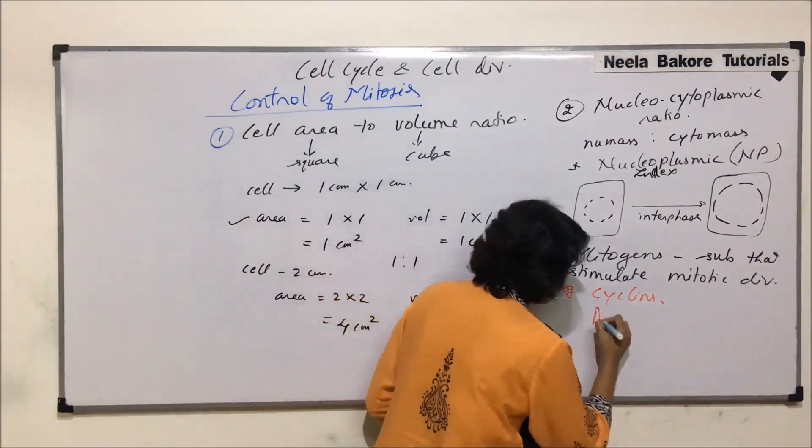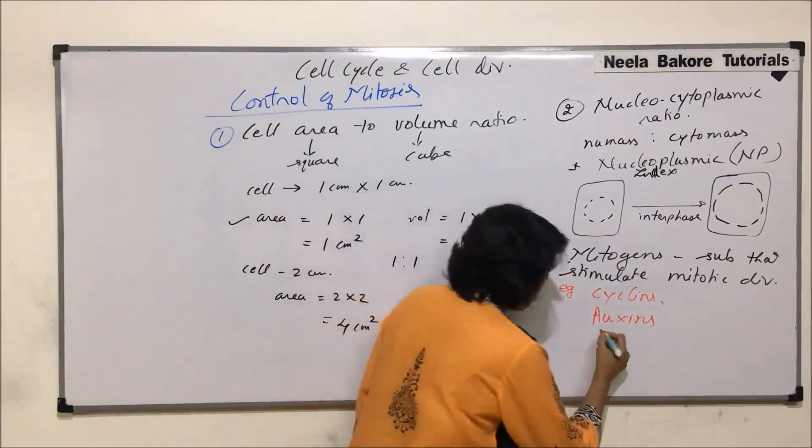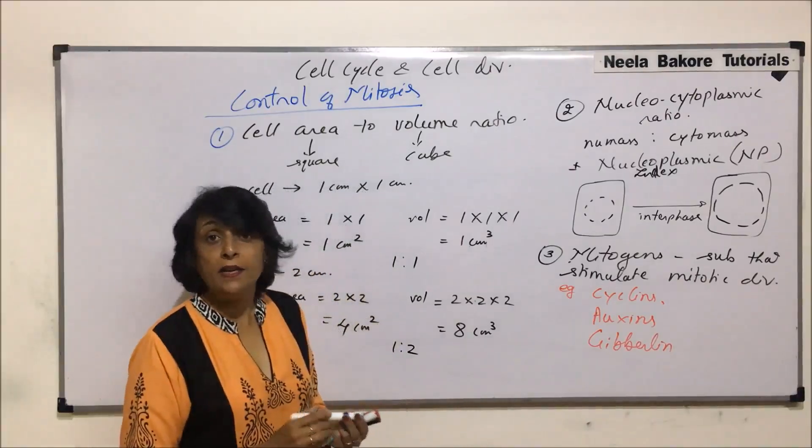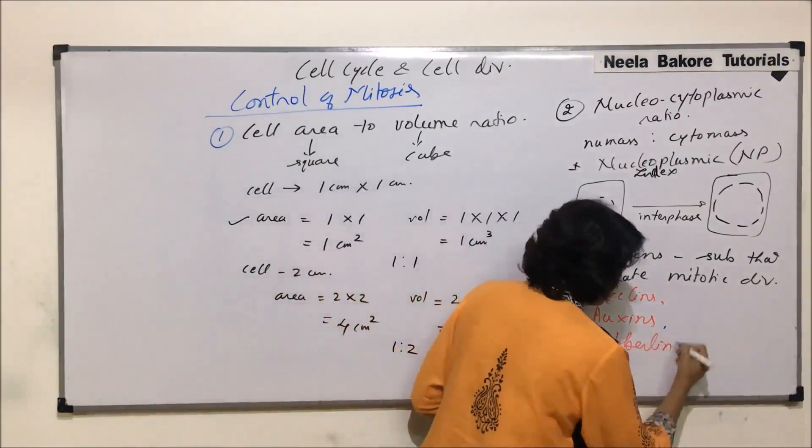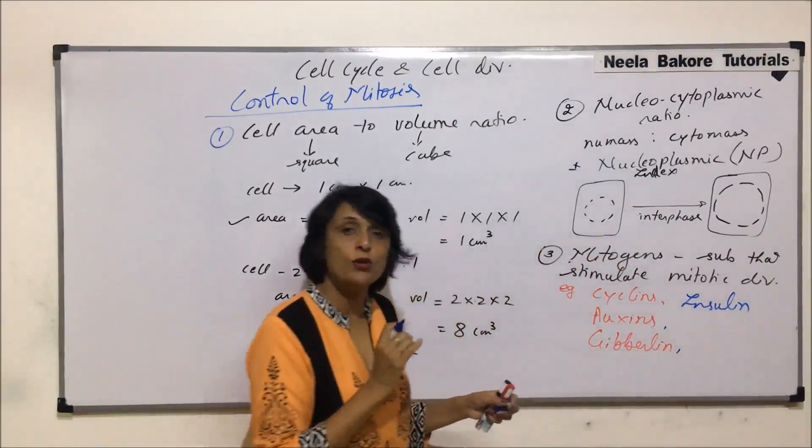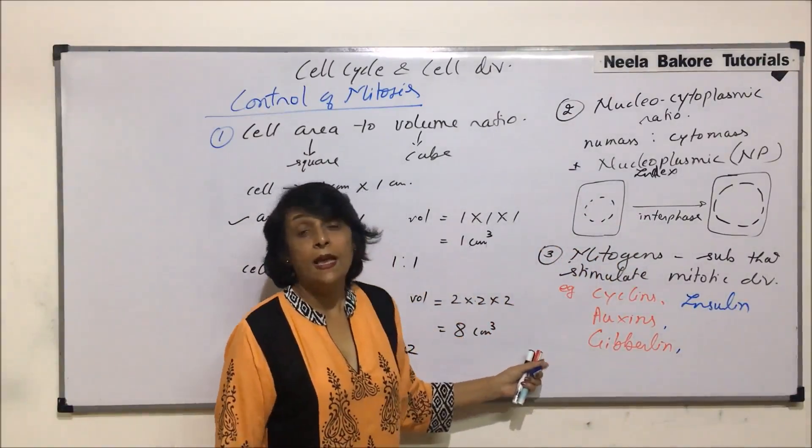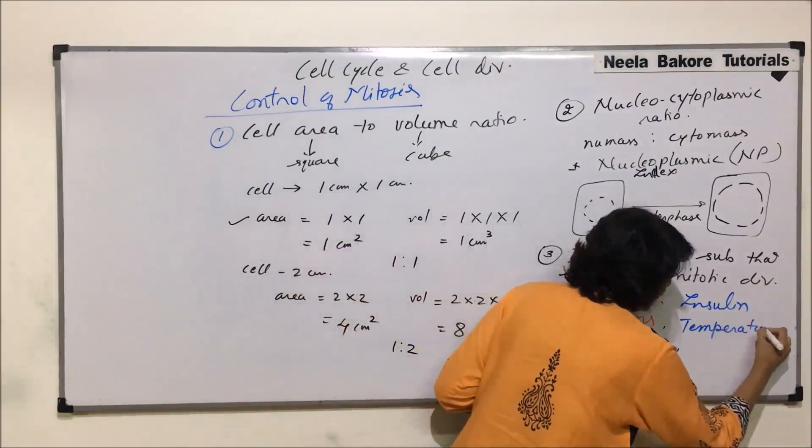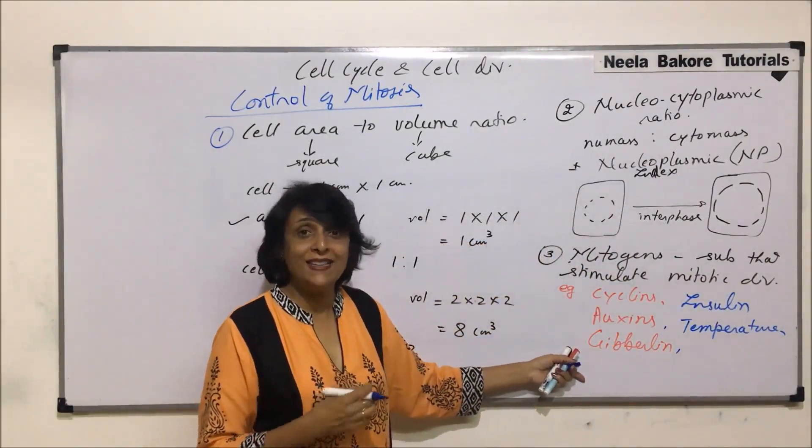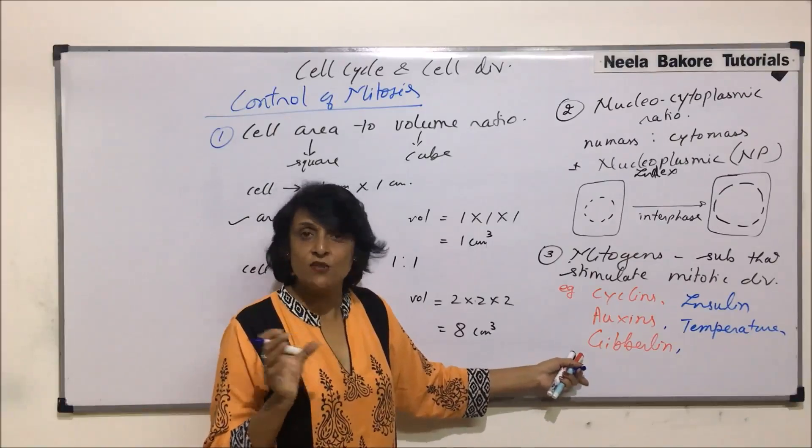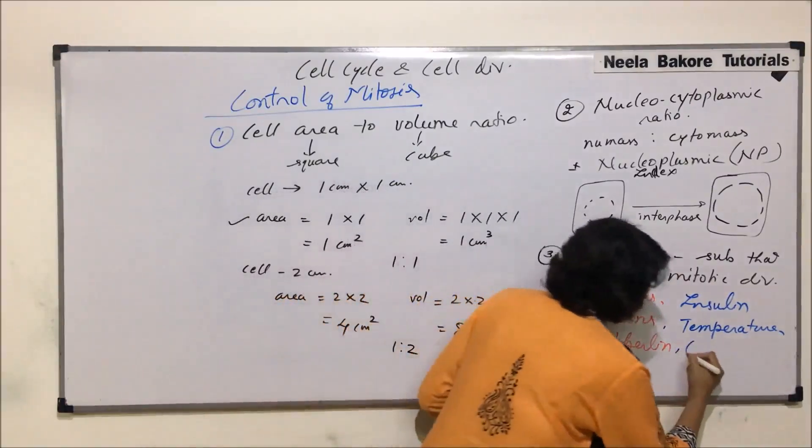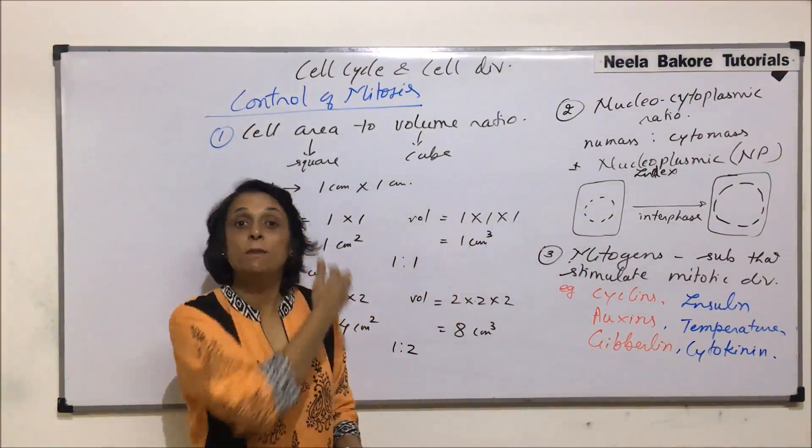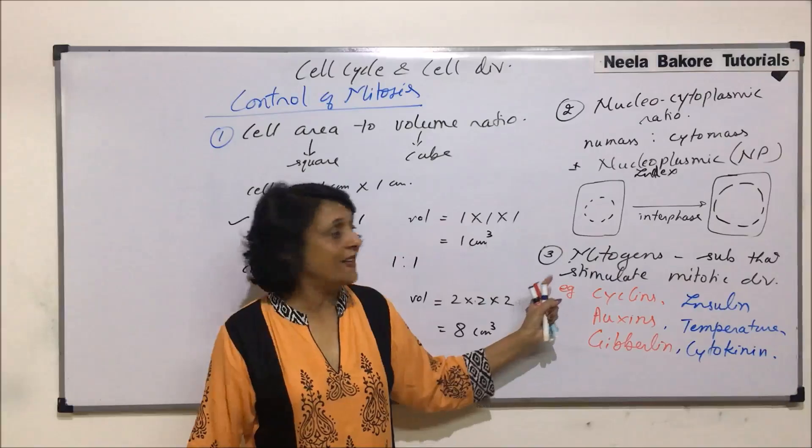Certain phytohormones like auxins, gibberellic acid or gibberellin, they are also considered as mitogens. Insulin is also believed to trigger mitosis. So another example is insulin which is also mitogenic. That means it triggers mitosis. Slightly higher temperature also triggers mitotic division. And one more phytohormone, cytokinin, its name itself is cyto for cytoplasm and kinin is for division. Cytokinesis. So that hormone that is cytokinin, these are some important substances which trigger mitotic division. And that is why they are called mitogens.